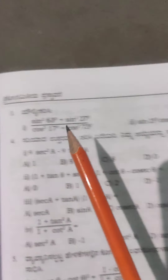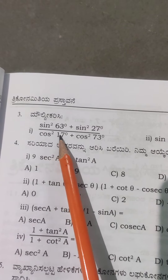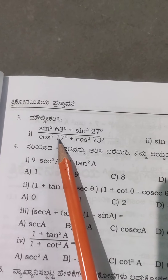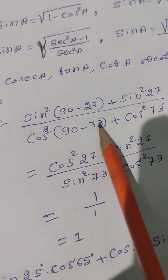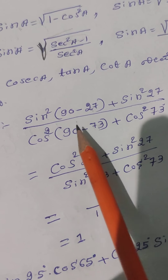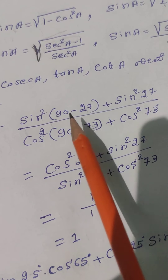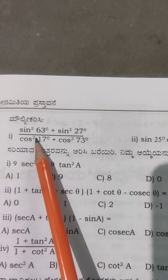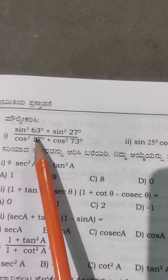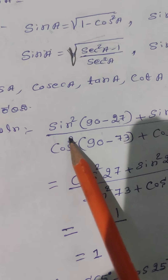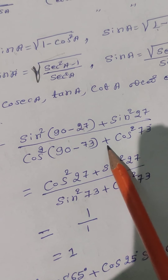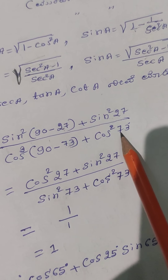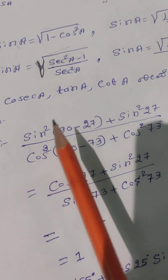Here we go. cos²70° is equal to cos²(90° − 73°). So, cos²(90° − 73°) + cos²73° + cos²73° + cos²...